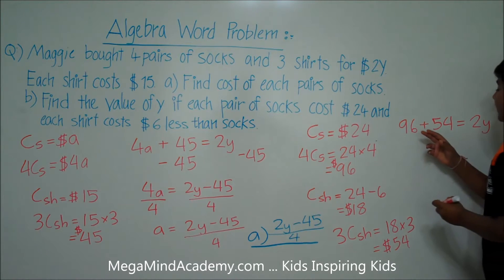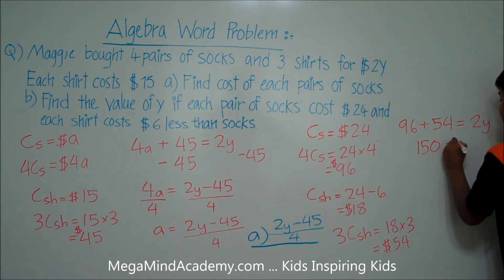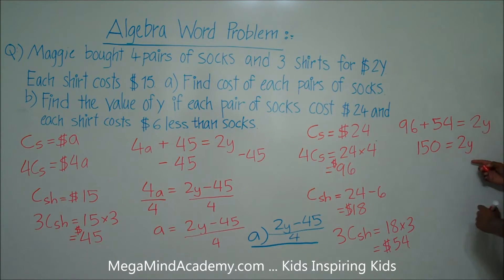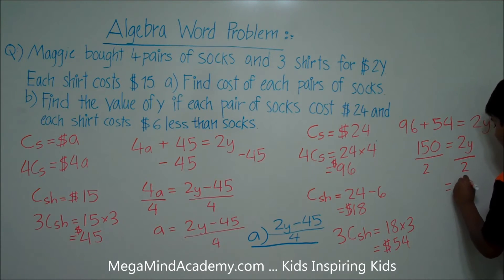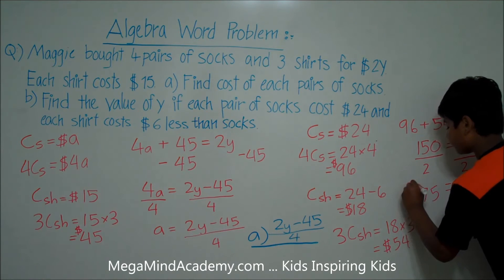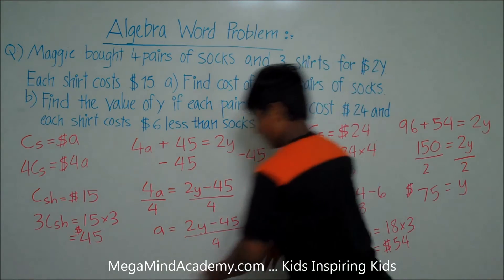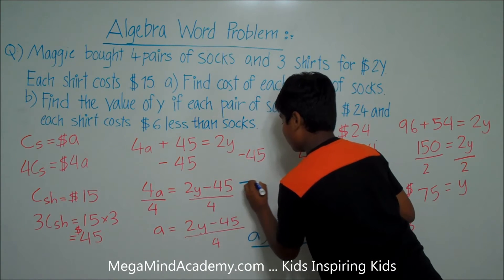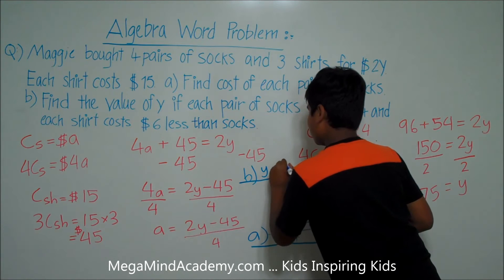Ninety-six plus fifty-four equals one hundred fifty, which equals 2Y. We're supposed to find the value of Y, so let's divide each side by two. 2Y divided by two equals Y, and one hundred fifty divided by two equals seventy-five dollars. So the answer to problem B is Y equals seventy-five dollars.